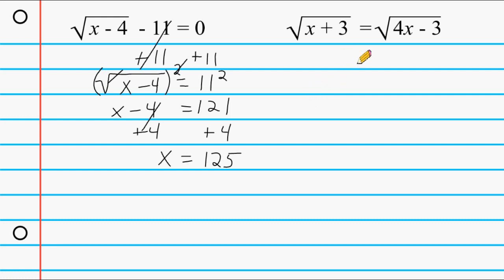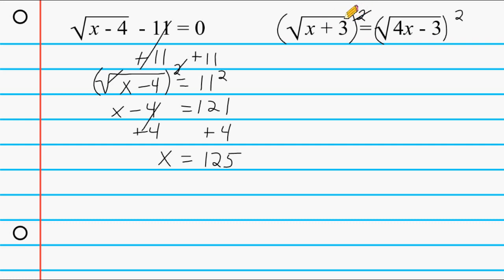Now with this example, notice we have a radical on both sides of our equation. If you see something like this you can still take everything on the left and square it, and what you do to the left you have to do to the right. So we have to square everything on the right as well. On the left, the exponent and the square root cancel each other out, as does the exponent and the square root on the right, leaving us with x plus 3 on the left and 4x minus 3 on the right.